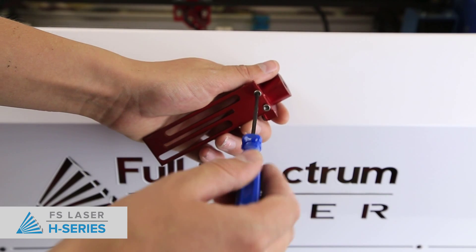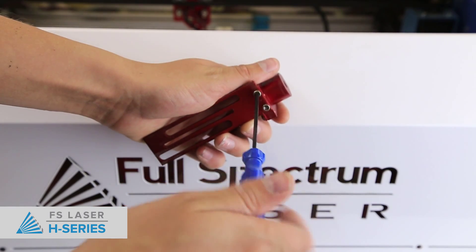Using a 2.5mm hex key, remove the two screws and remove the focus lens arm.